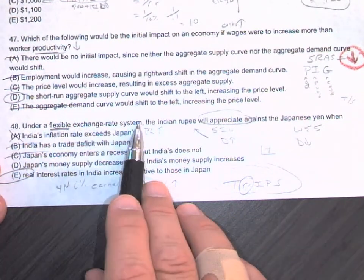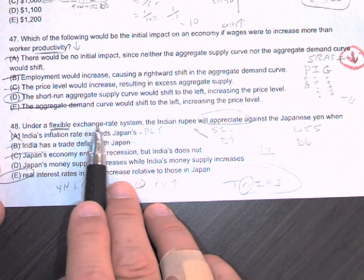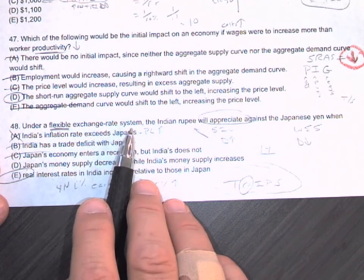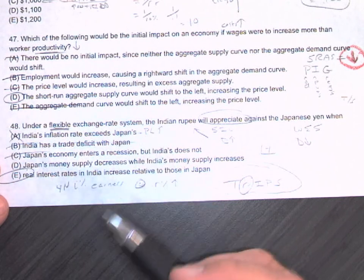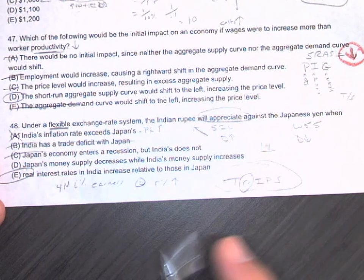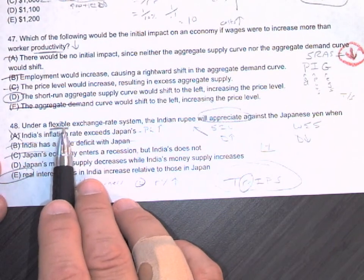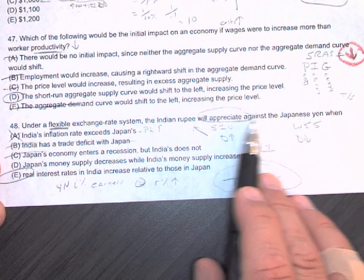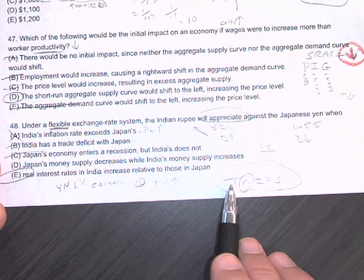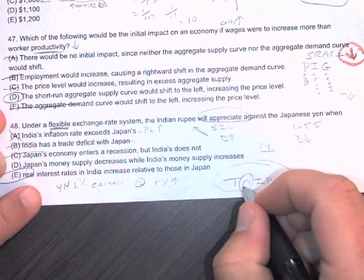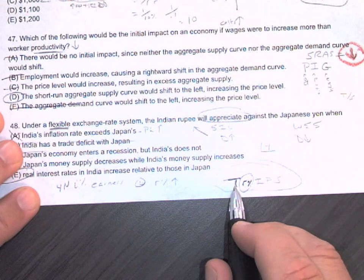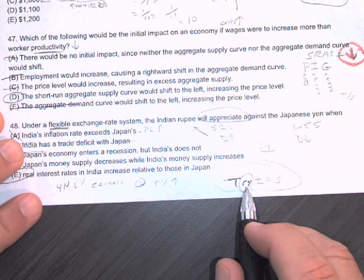Number 48. Under a flexible exchange rate system - this is kind of a given because every country uses a flexible exchange rate system. There's no set amount for how many pesos you get when you go to Mexico; it has to change and alter. The Indian rupee will appreciate against the yen when - once you see foreign exchange stuff, remember we have our acronym TRIPS, and TASTS for foreign goods and services, and the real interest rate.